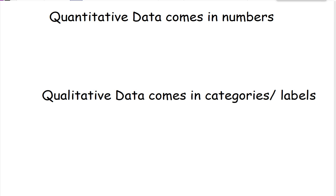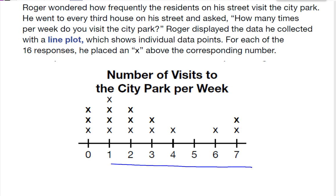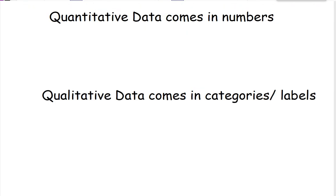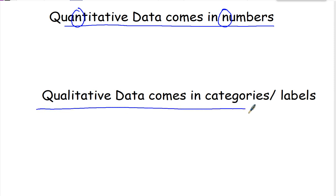Now you notice there are two different types of data here. We had times a week, which are numbers, and we had different activities that are written in words. Quantitative data comes in numbers, and that's what we call quantitative. The way I like to remember it is quantitative has N in it, and so does the word numbers. Qualitative data comes in categories or labels. Qualitative has an L, and so does the word label.